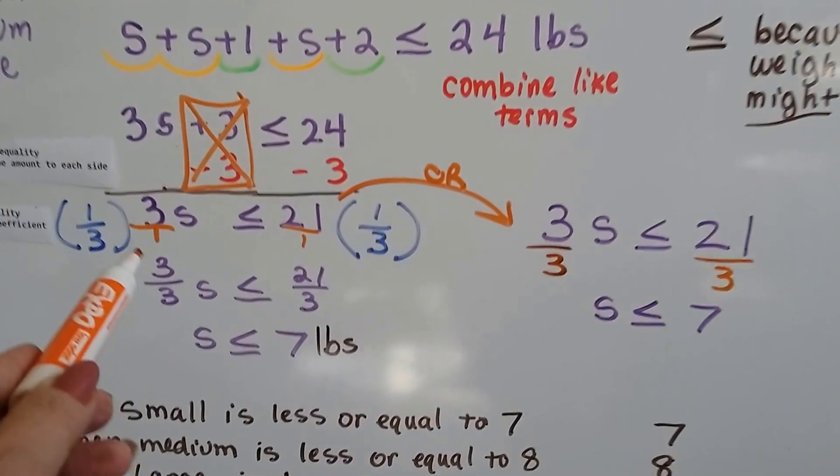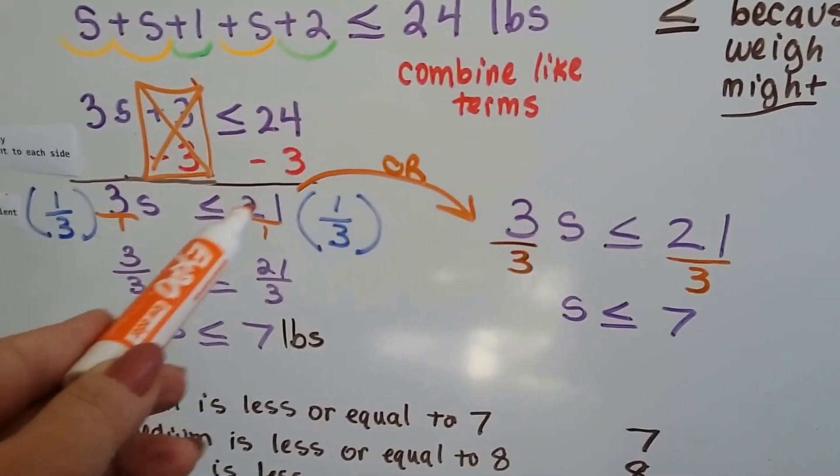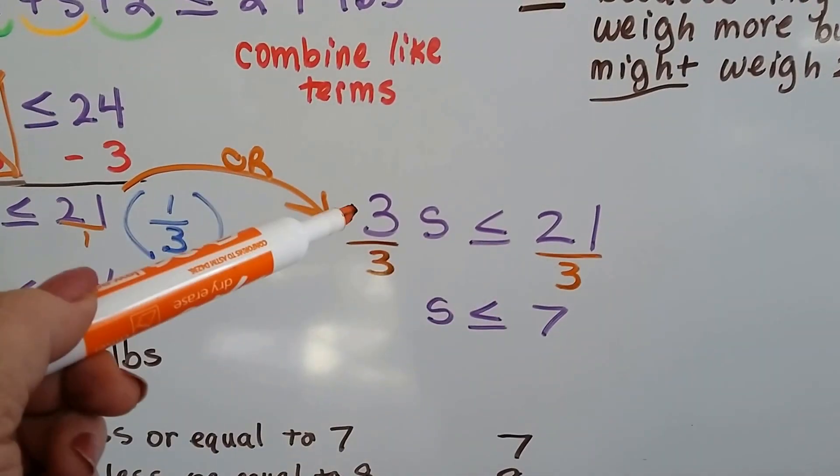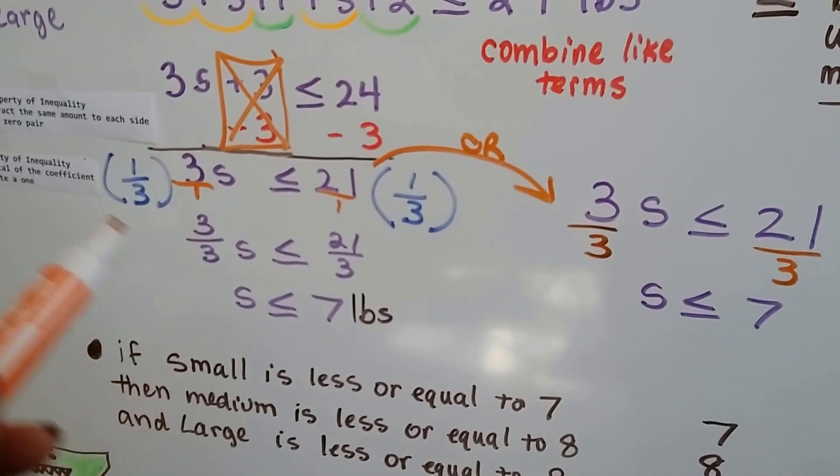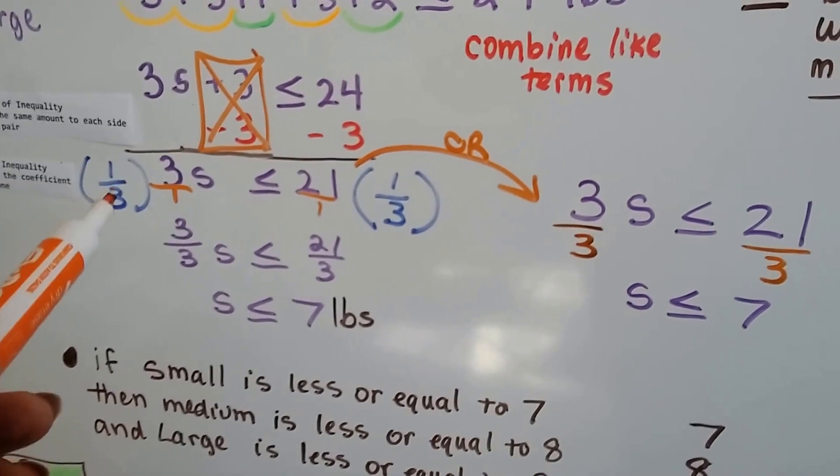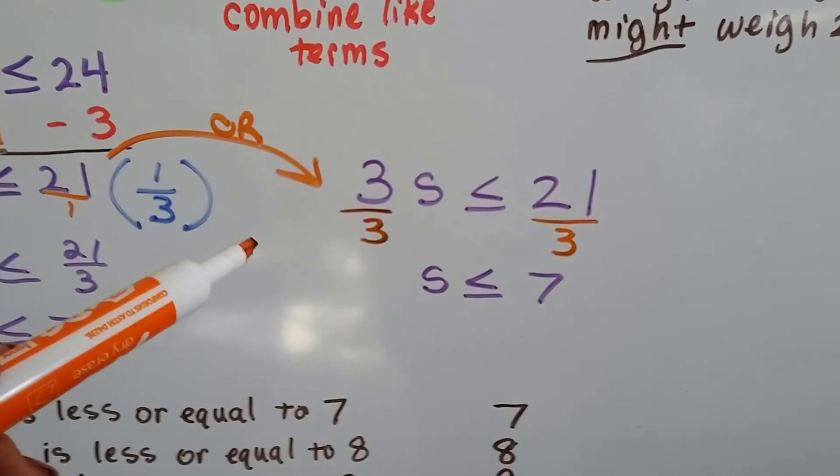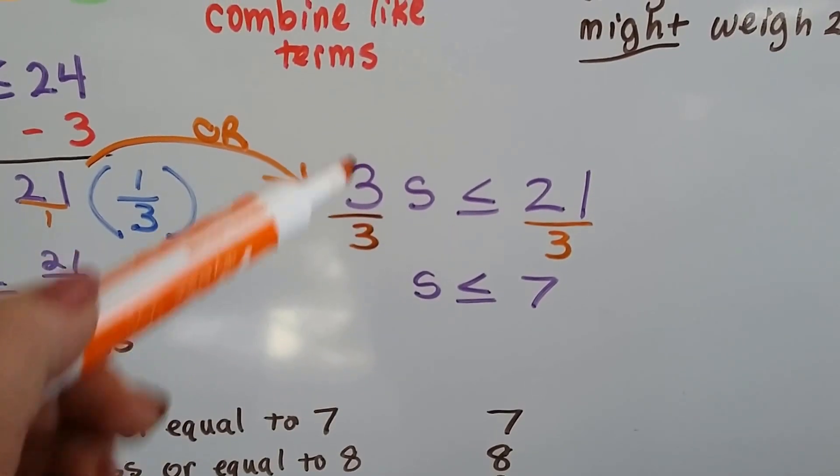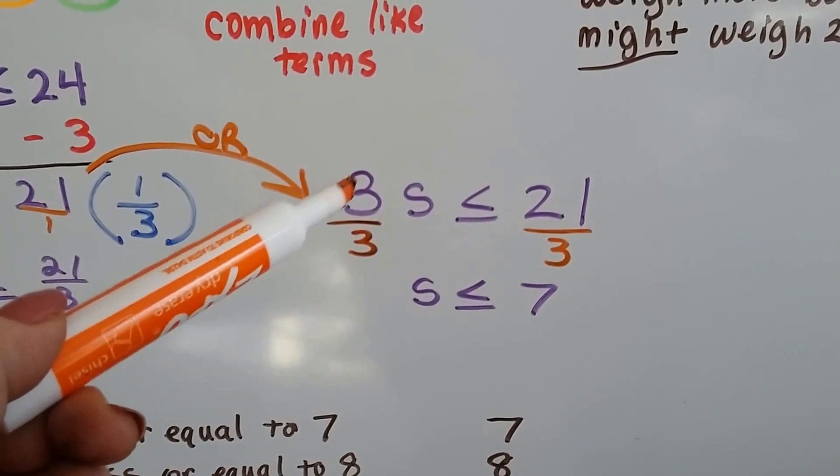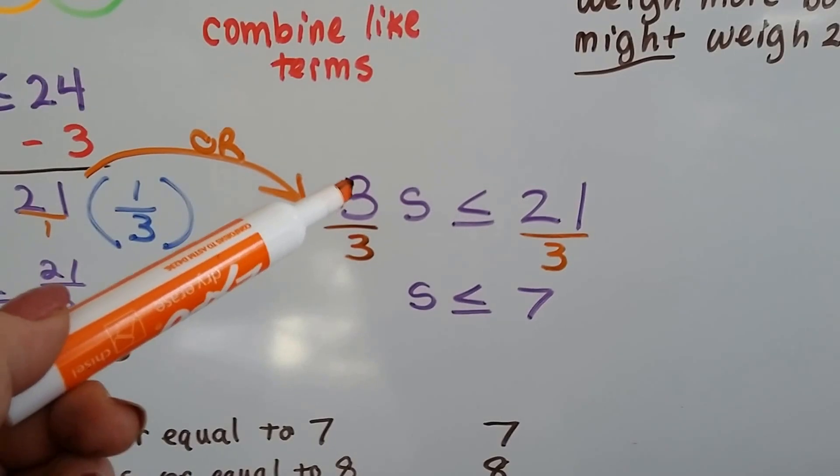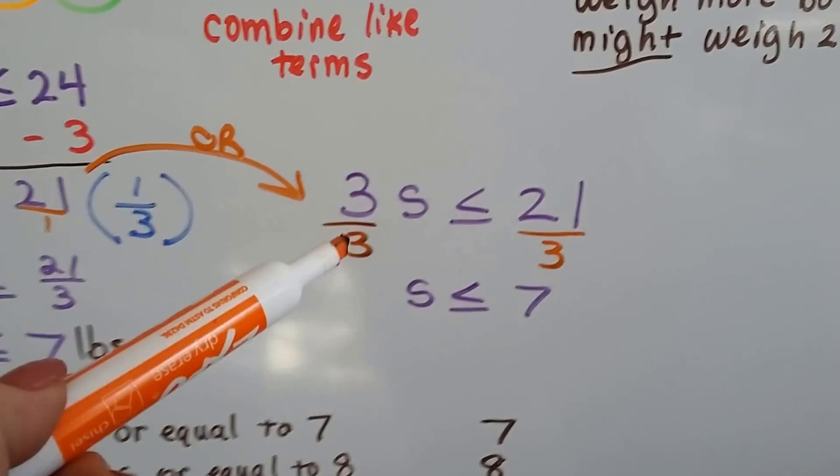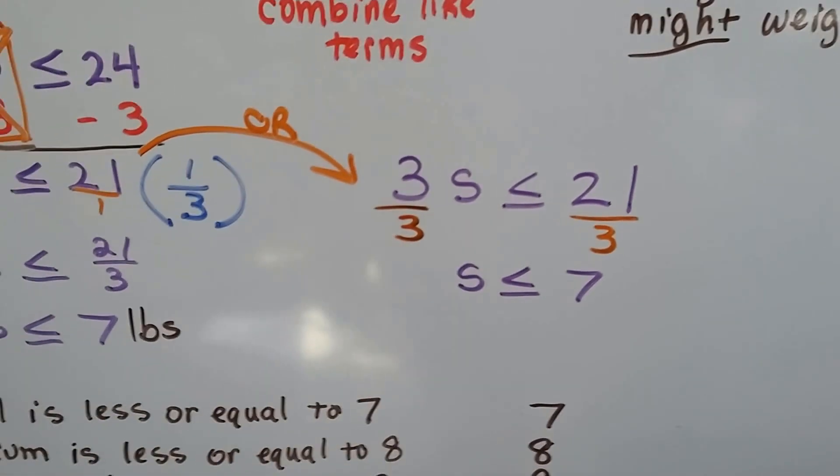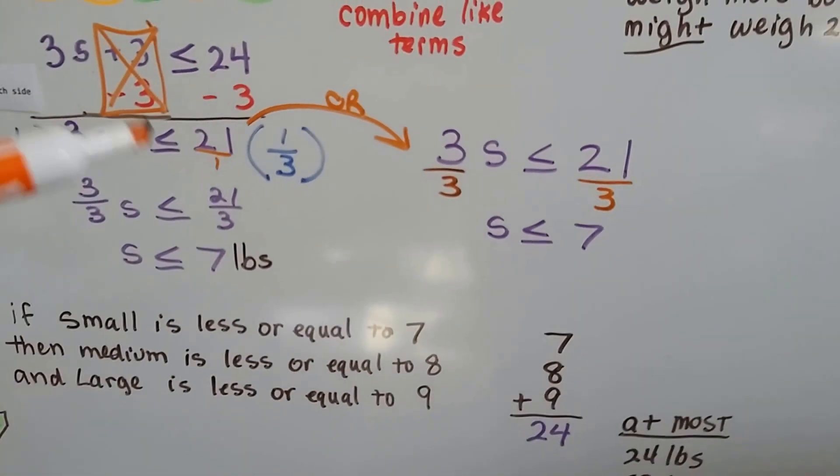Now, we also could have done this, when we were at the 3s is less than or equal to 21, we could have just divided both sides by the coefficient. Instead of multiplying it and using that multiplication property of inequality, a quicker version would be to just divide both sides by this coefficient, which is a good thing to do, to go fast. If this is not a fraction, if it's a whole number, just divide both sides by the coefficient, and you're going to get s is less than or equal to 7 much faster, and you skip a couple steps.